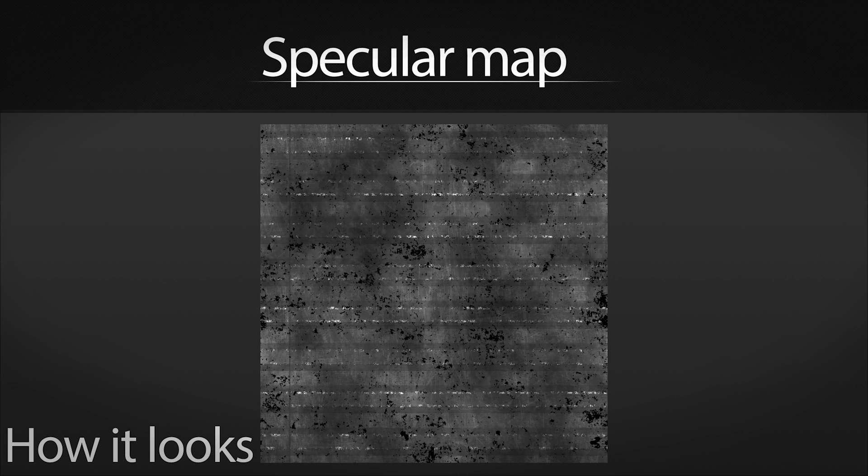Specular maps are made with a black and white image from your diffuse map or normal map for the best effect. The black and white colours in the image define if the material will reflect back or not. Black means no reflection and white means that it will reflect back.